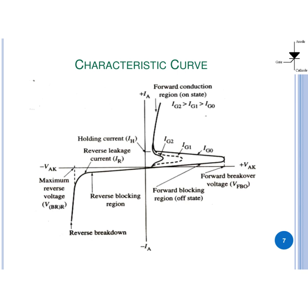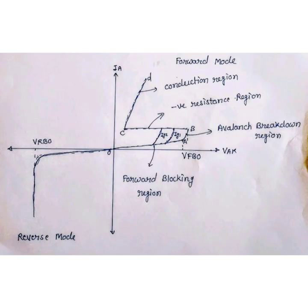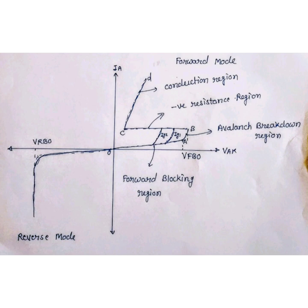In this characteristic, from point O to A in the forward blocking state, transistors are in the cut-off state. From A to B, the lower transistor comes to the active region. From region B to C, voltage blocking capacity decreases and current starts increasing as the upper transistor also comes into the active region — that's why this region is called the negative resistance region. From C to D, both transistors are in the saturation region and start handling large current. So by using these two transistors we form the SCR.